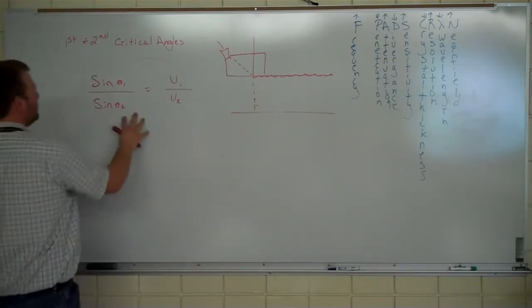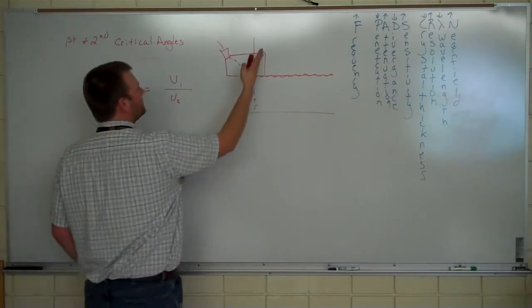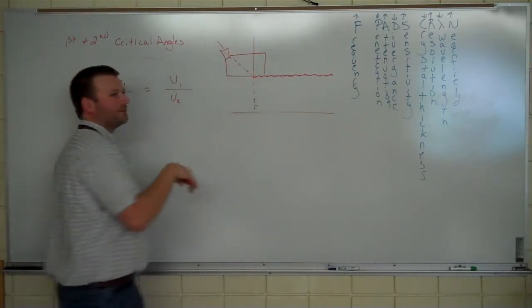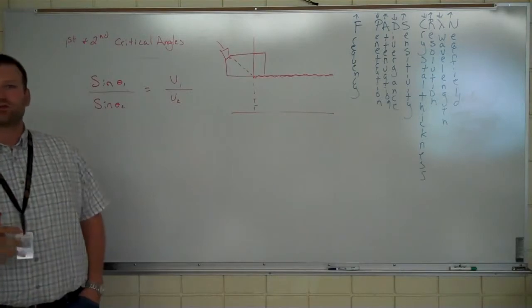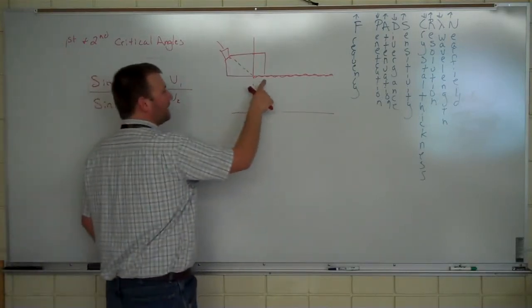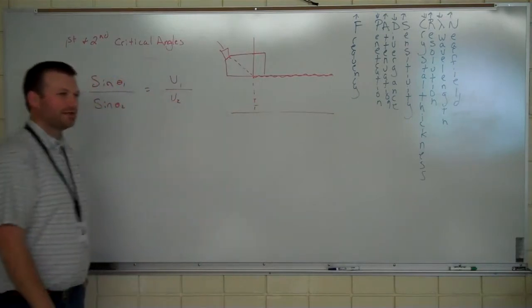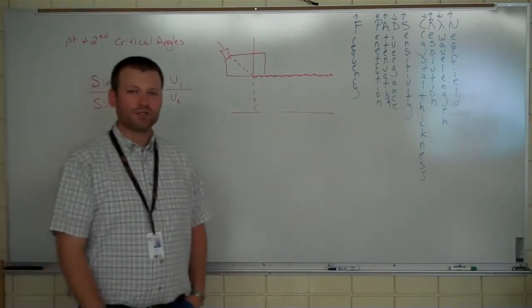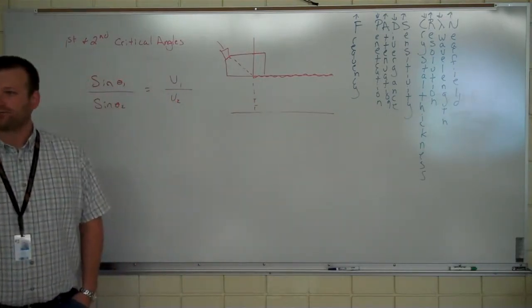Alright, so we're still going to use Snell's Law formula, and then we keep tipping this transducer back farther and farther. The second critical angle is the same thing, meaning when the wave gets refracted out to 90 degrees or reflected out, but it is the shear wave. So it's when the shear wave gets reflected out or refracted back to 90 degrees, creating a surface wave, right?